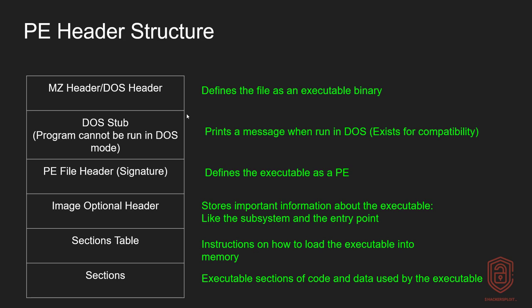We then have the image optional header, also known as the optional header. This is very important — it stores important information about the executable like the subsystem and the entry point, to name a few. We'll be taking a look at this in the following videos. We then have the sections table. The sections table contains instructions on how to load the executable into memory. This is very different from the sections themselves, as those who are already familiar with malware analysis will already know.